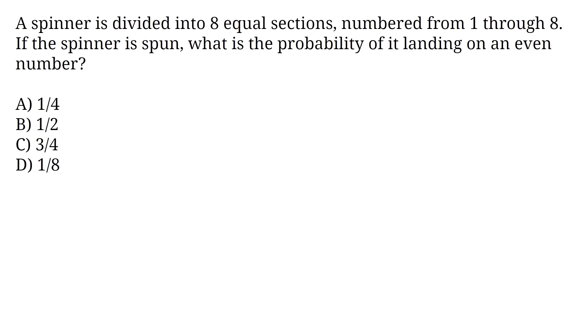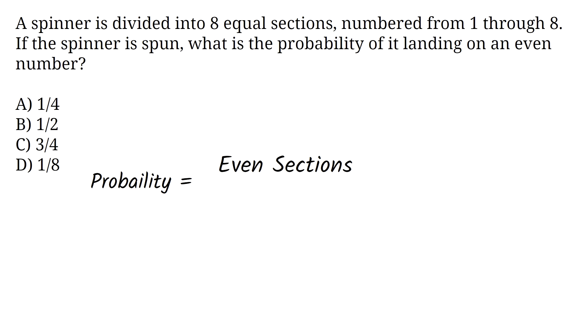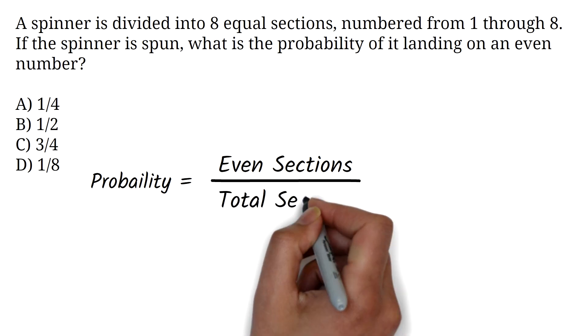A spinner is divided into 8 equal sections, numbered from 1 through 8. If the spinner is spun, what is the probability of it landing on an even number? A. 1 over 4. B. 1 over 2. C. 3 over 4. D. 1 over 8. To pass the GED, you must be familiar with solving probability questions. To find the probability of landing on an even number, we need to count how many even numbers there are on the spinner, then divide that by the total number of sections.